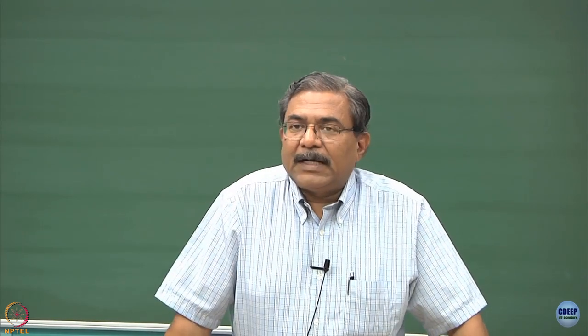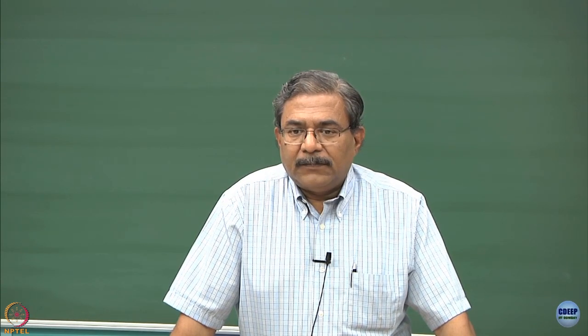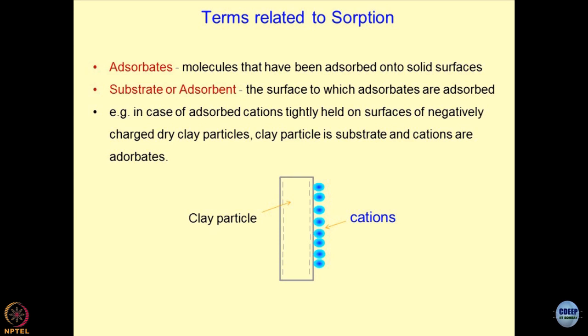When we talked about cation exchange capacity of geomaterials, a question was asked about the significance of washing several times and allowing the geomaterial to interact with sodium acetate and calcium chloride solution. Now you can realize what we have done in determining CEC: we allowed sorption and desorption to occur. All the sodium ions present in the geomaterial under natural circumstances get displaced by cations like calcium, which have higher preference. This is the sorption process. Then washing with water is the desorption process. By repeating this cycle, we tried to quantify how many cations can still remain parked on the surface of the adsorbent.